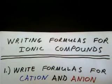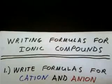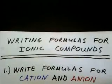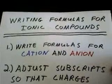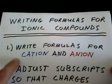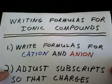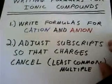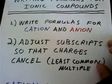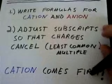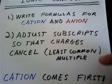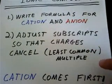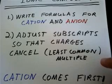All right, so in this video I'm going to talk about writing formulas for ionic compounds. To write the formula for an ionic compound, what you're going to do first is write the formulas for the cation and the anion separately. The next step is to adjust the subscripts so that the charges cancel, and usually the way that we do this is by finding the least common multiple of the charges of the cation and the anion.